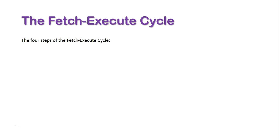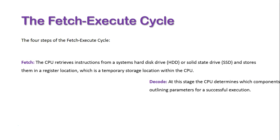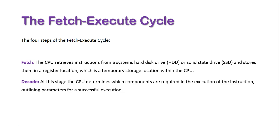Let's have a look at these four steps. We've got Fetch, where the CPU receives instructions from the system's hard drive or solid state drive and stores them in a registered location, which is a temporary storage location on the CPU. We then Decode, where the CPU determines what components are required for the execution of the instructions, outlining parameters for successful execution.